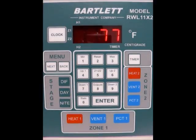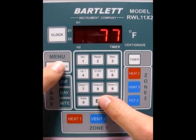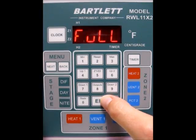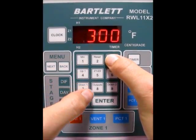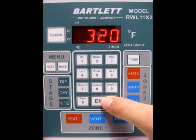So now that we've programmed those, we need to program our full open time so it knows what percentage is what amount of time. So we'll hit the back button until we go to Full. And then we're going to press Enter. Now it's asking for your seconds. So how long does it take for Vent 1 to open? So let's say it takes 320 seconds for Vent 1 to open. Type that in and press Enter.